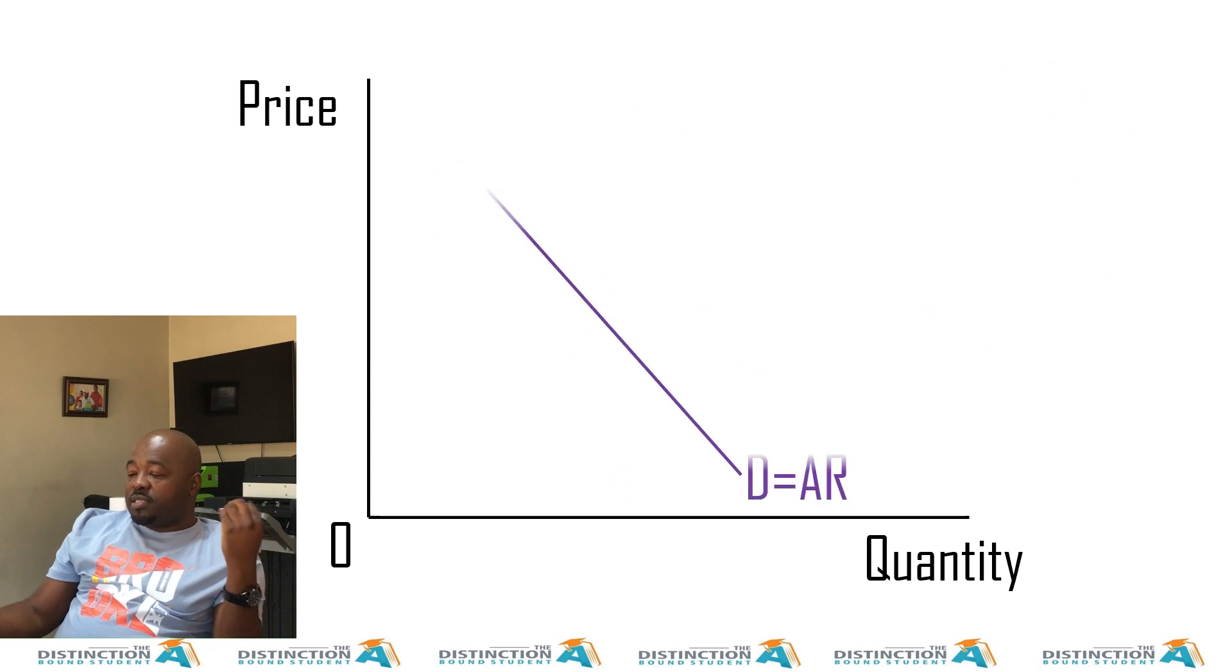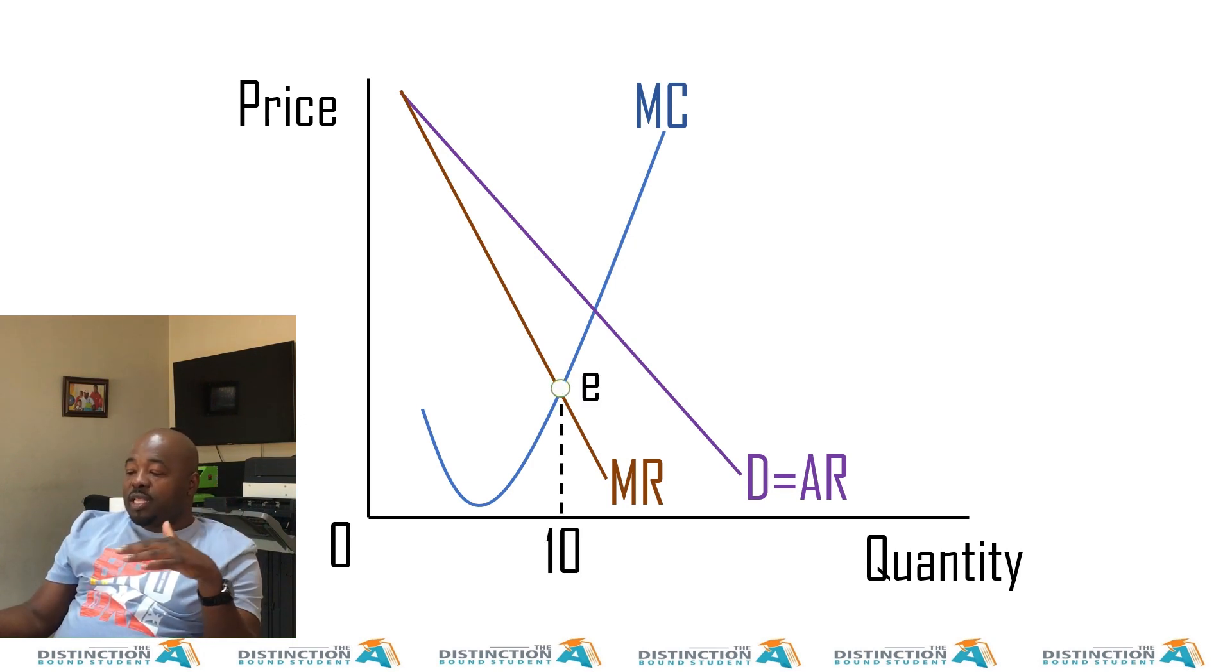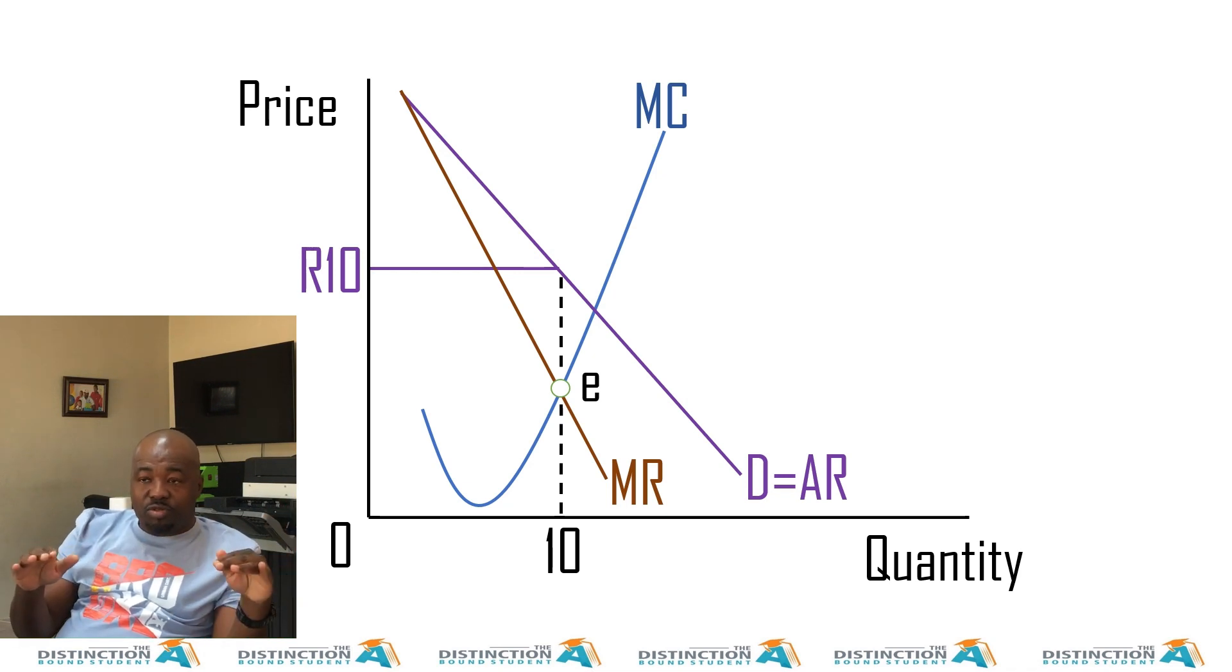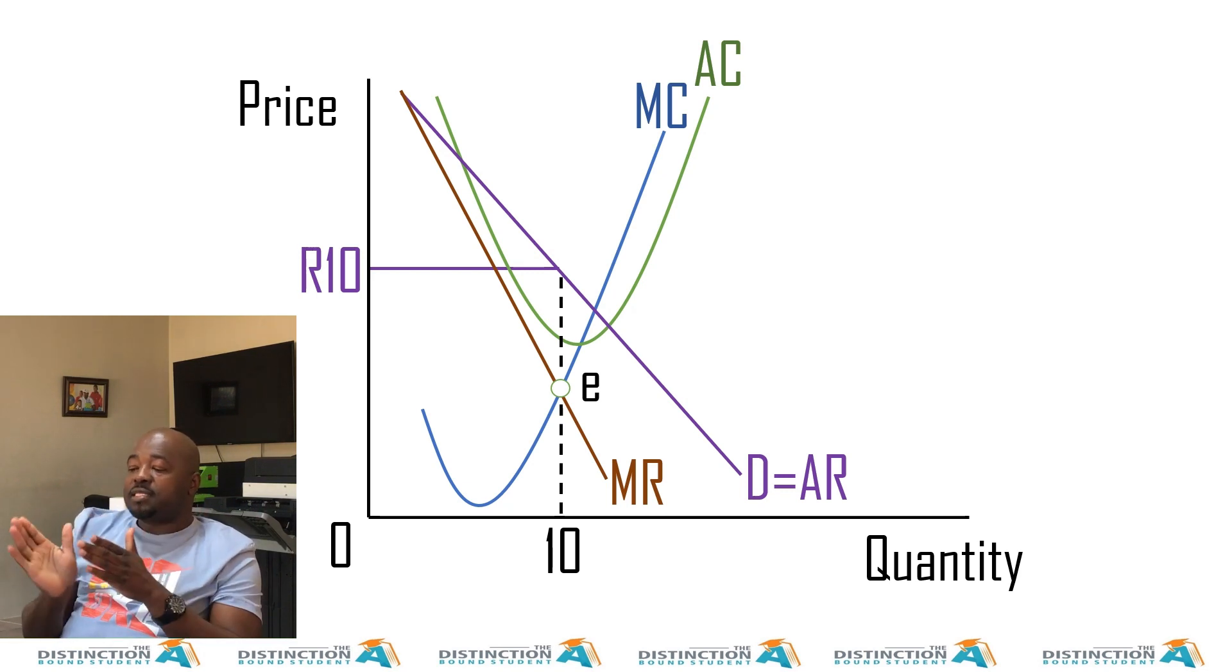The last graph, same thing. D-AR, downward sloping, MR, downward sloping, profit maximizing point, point E, and then price not there, but up there, yes, 10. Then what kind of profit is this? We have no idea. Why do we say we don't know? Because there's no AC. We compare AC and AR. MC has nothing to do with this. And, oh wow, it's down there. That's basically what we want to see. This is an economic profit for sure.